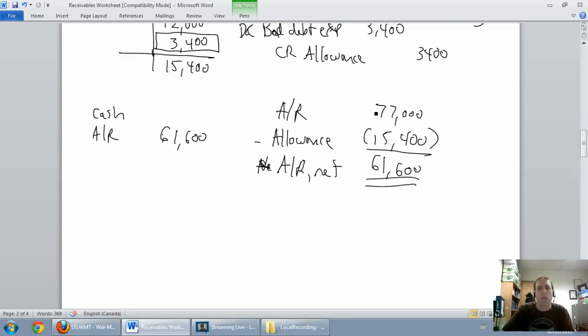I don't need to tell my shareholders I'm going to get $77,000 when I really don't think I am. I only think I'm going to get $61,600. That's the number I present on the face of my financial statements. That's my net accounts receivable. So, now we've looked at the income statement method and the balance sheet method. In our last video, and it's going to be a shorty, we're going to learn how to write off accounts receivable.